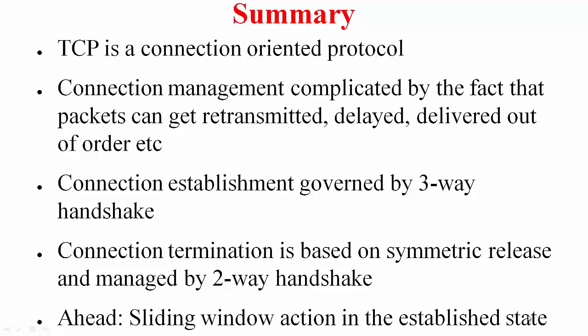To summarize: TCP is a connection-oriented protocol. Connection management is complicated by the fact that we are running over a best-effort service model. We saw a specific problem arising from duplicate packets interfering with new connections, which we handle via the three-way handshake — using random initial sequence numbers also helps in this context. Connection termination is also a complex problem, but we went with a simple two-way handshake approach. We also looked at the TCP state diagram. Up ahead, we will see the sliding window in action in the established state.